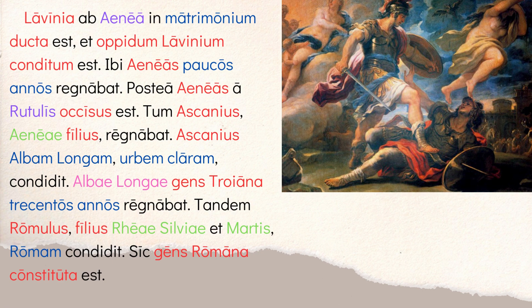'Postea Aeneas a Rutulis occisus est' — afterward Aeneas was killed by the Rutulians in one version of the story. 'Tum Ascanius, Aeneae filius, regnabat' — then Ascanius, the son of Aeneas, ruled. 'Ascanius Albam Longam, urbem claram, condit' — Ascanius founded Alba Longa, a famous Roman city. 'Albae Longae gens Troiana trecentos annos regnabat' — in Alba Longa (locative case), the Trojan people ruled for 300 years. Trecentos: tres (three) plus centum (hundred).